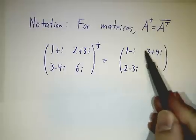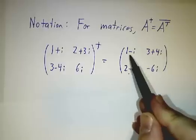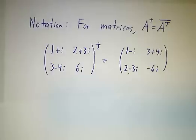Instead of 3-4i, you get 3+4i. Instead of 2+3i, you get 2-3i. Instead of 1+i, you get 1-i. Instead of 6i, you get -6i.